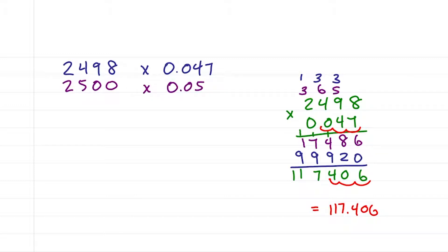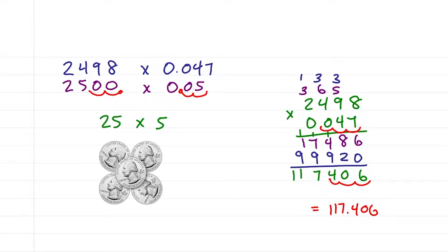Next, apply the decimal trick. We'll move this decimal twice to the right, this one twice to the left, giving me 25 times 5 and that's 5 quarters for $1.25.